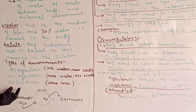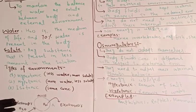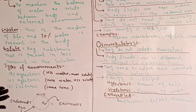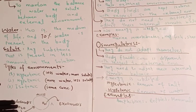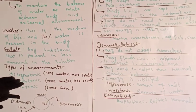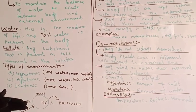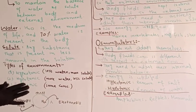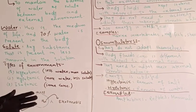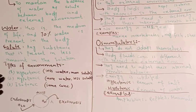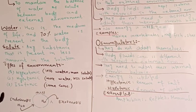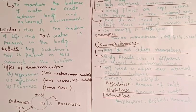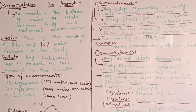If we talk about isotonic, the environment concentration will be the same on both sides — the concentration of both water and solute will be similar, balanced, and equivalent. So these are the three types of environments we have studied as an overview.